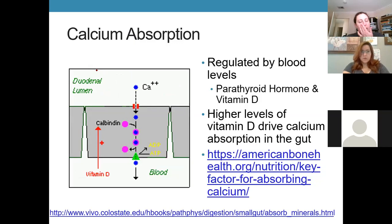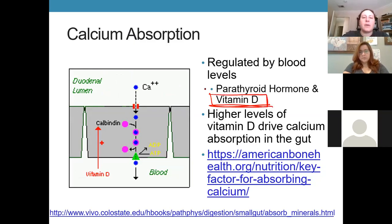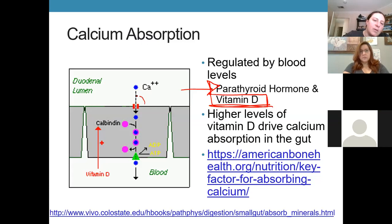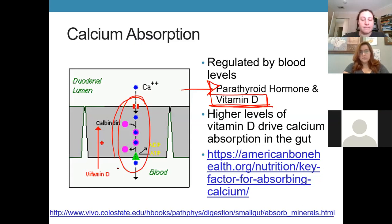For calcium absorption in the digestive system, vitamin D is the critical factor. Parathyroid hormone regulates blood calcium levels — increasing them if they get too low — but to actually absorb calcium from the intestinal lumen, we need vitamin D because it controls how many channels we have available to bring calcium in. Since many people struggle with anemia and calcium issues, additional resource links were provided, but this regulated absorption is the key concept at this level.